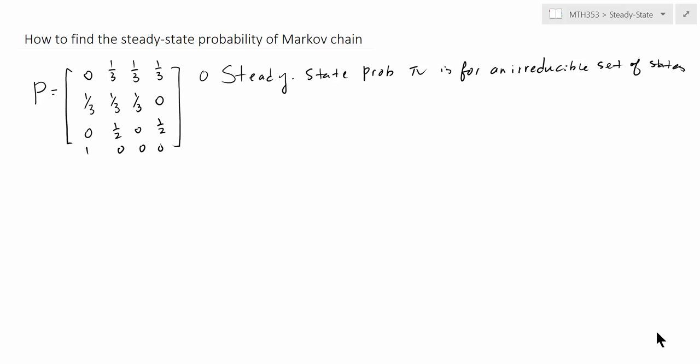Let's look at an example of how to find the steady-state probability for a Markov chain. First, we remember that the steady-state probability — this probability vector pi — is for an irreducible set of states. Let's look at this Markov matrix. We will first try to see why this defines an irreducible set of states. In class we said that you need to draw a state diagram and see if one state can get to every other state and come back, making sure every state is irreducible and recurrent.